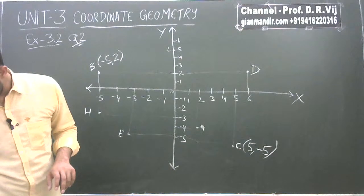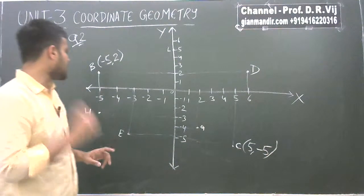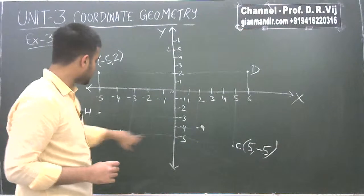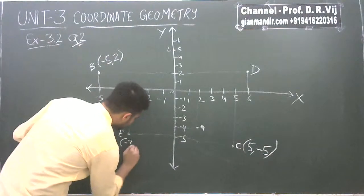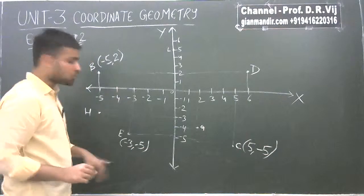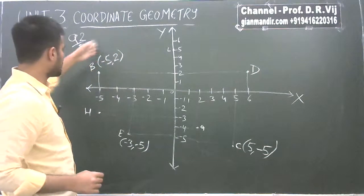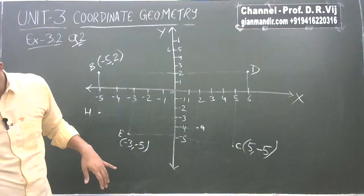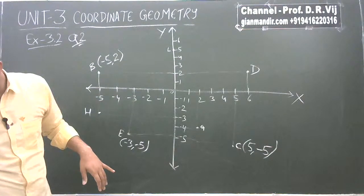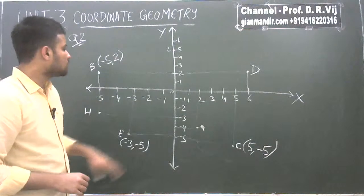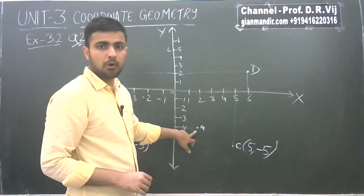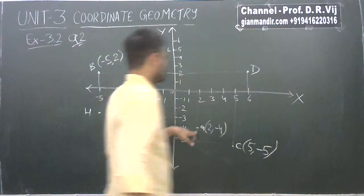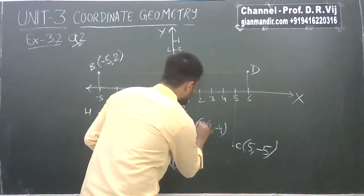Third part: the point identified by coordinates (-3, -5). Minus 3 on X and minus 5 on Y — the point is E. Fourth part: the point identified by coordinates (2, -4). The point is G.